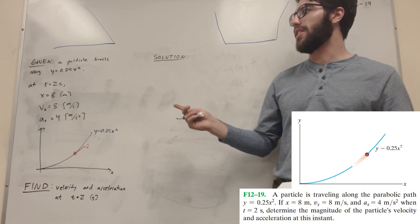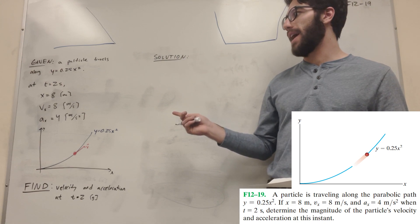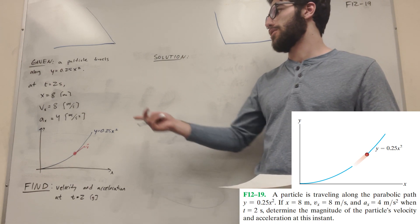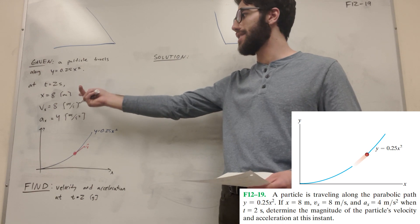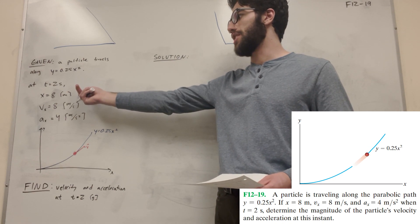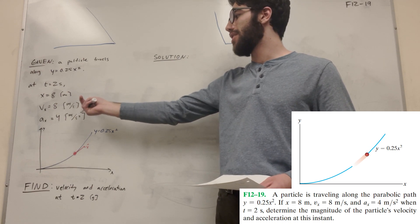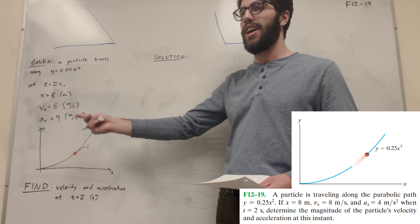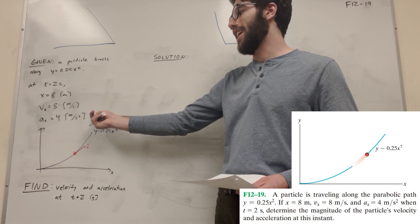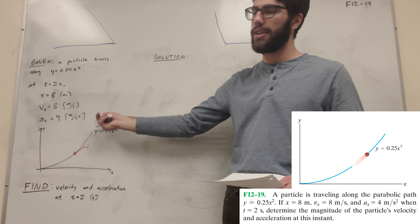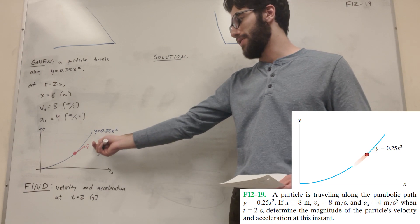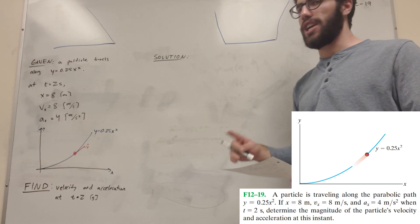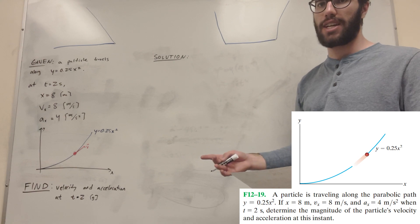We have a particle that's traveling along this parabolic path, and we're given three things. At time equal to two seconds, our position is eight meters along the x direction, our velocity in the x direction is eight meters per second, and our acceleration in the x direction is four meters per second squared. We're given this graph, and we need to find velocity and acceleration at t equals two seconds.